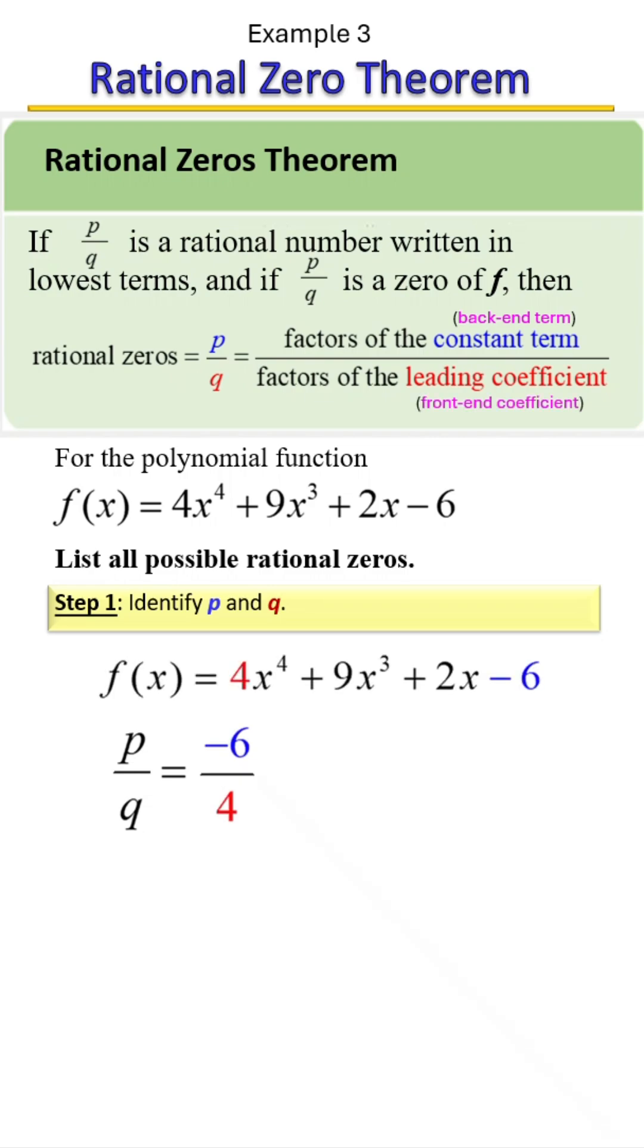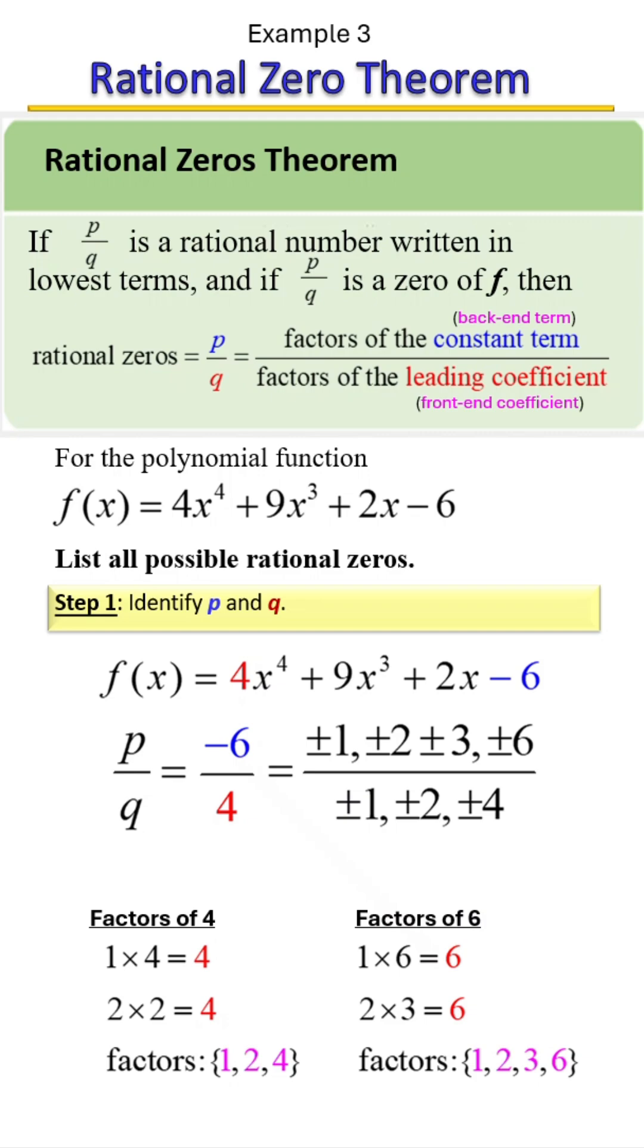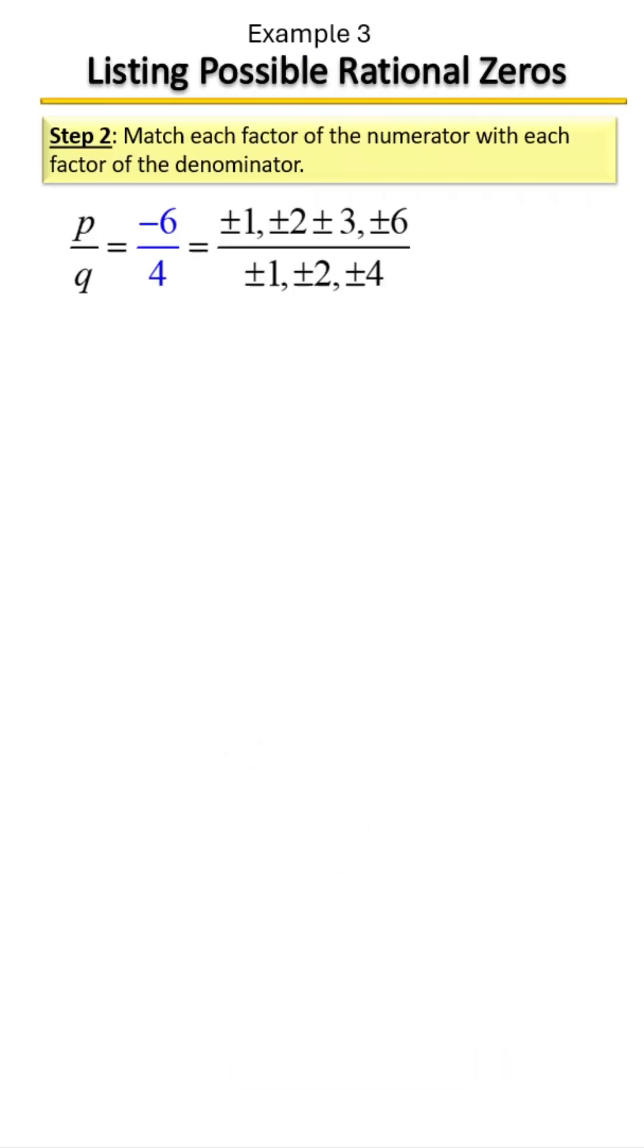And now we're going to list factors of the top and bottom. It does not matter whether the top or bottom is negative, because when you write rational zeros, you're going to write them as plus or minus anyway. So let's find factors of six and let's find factors of four. And then we're going to write them as P over Q.